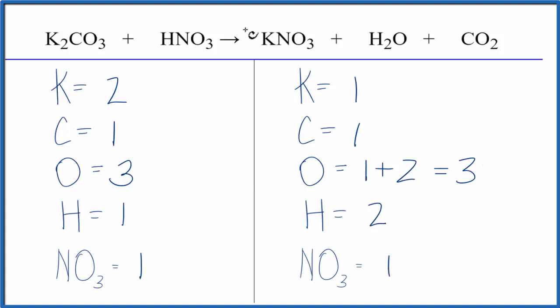So we can put a two in front of the KNO3, we have one times two, that'll give us two potassium atoms, so those are balanced.